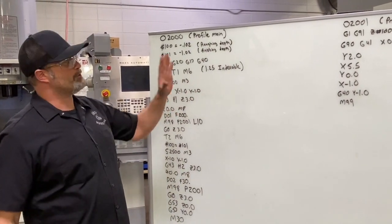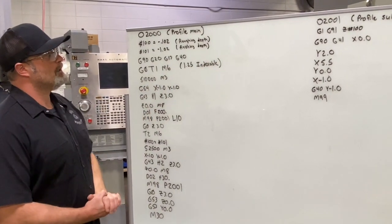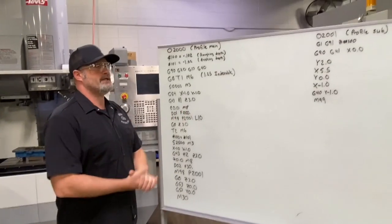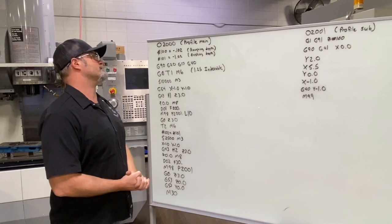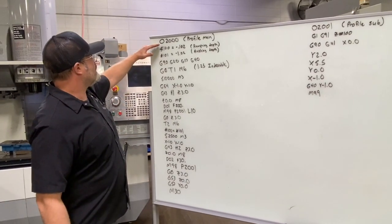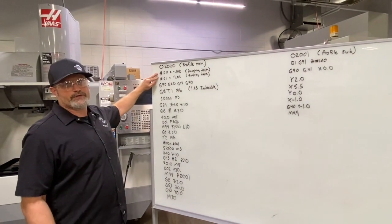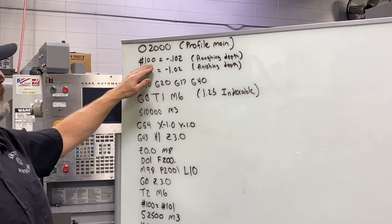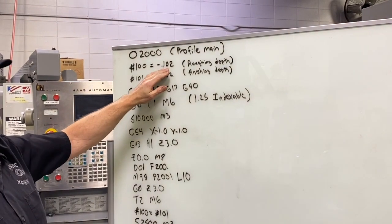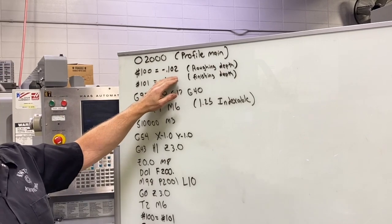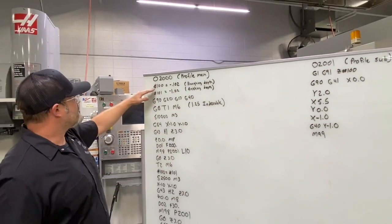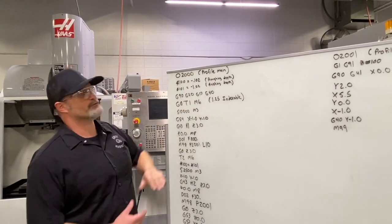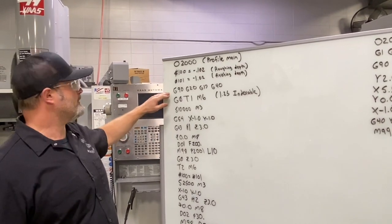Now let's look at our program. We're using a common sub program for both tools to rough and finish, and I incorporated some variables — this is an option on some machines, so make sure you verify your specific machine has variables available. Starting off I have my program number and name, then I set two variables for my Z depth, because it's going to be different from one tool to the next. Variable 100 equals negative 0.102 — that's my roughing depth used in the sub program. Variable 101 equals negative one inch twenty-thousandths — that's the depth for my finishing tool.